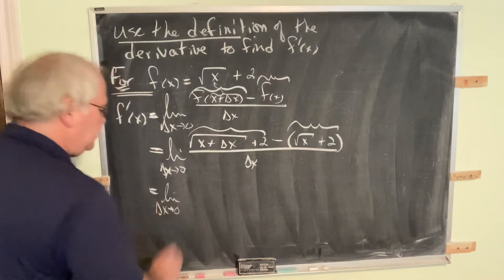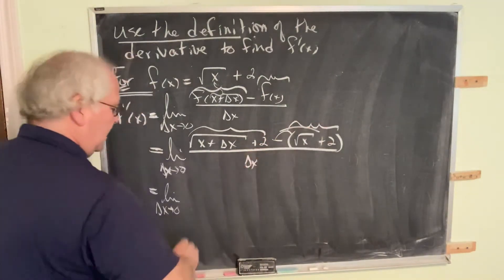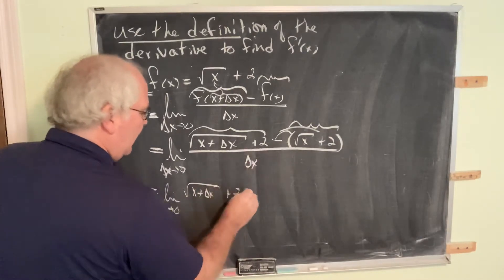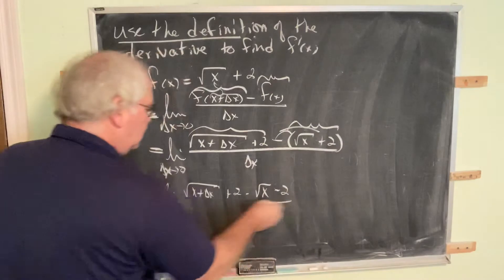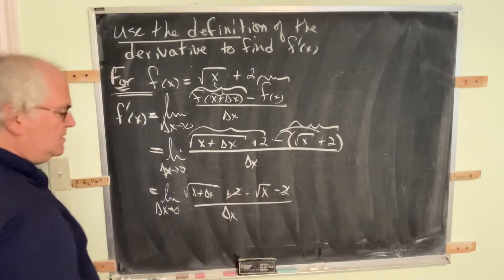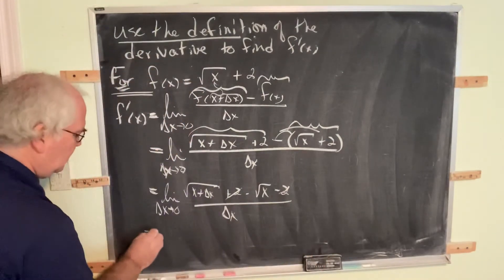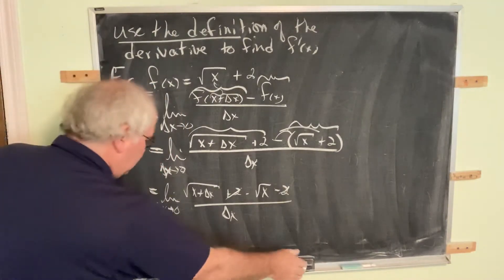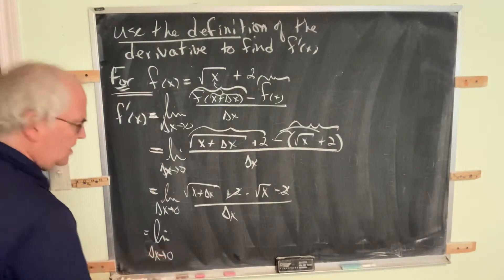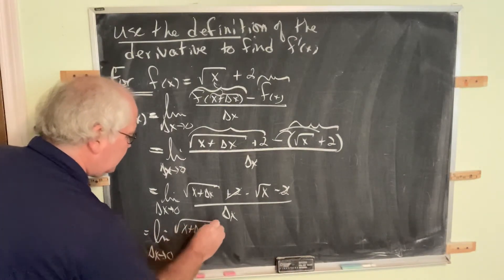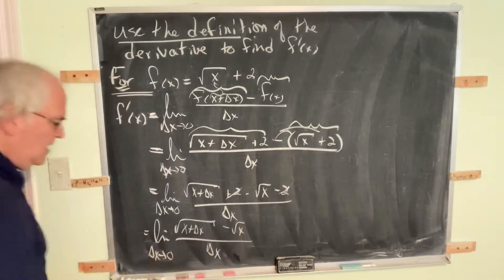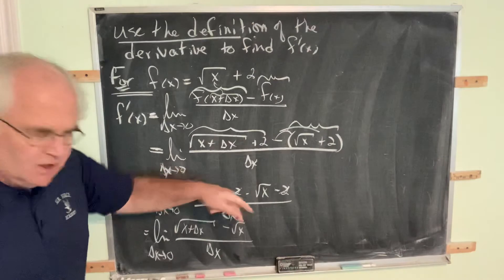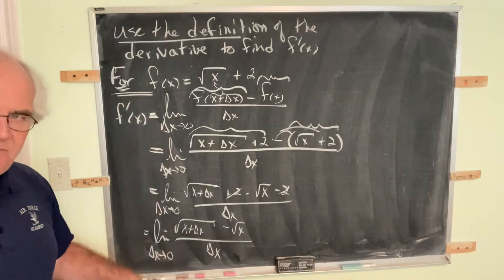So the limit as delta x goes to 0: let's distribute this negative sign. We get minus square root of x minus 2, all over delta x. The 2's cancel, so at least we have that. We're left with the limit as delta x goes to 0 of the square root of x plus delta x minus the square root of x, all over delta x. Again, direct substitution gives us 0 over 0. We need to do more algebra, and we recognize this as a limit variety we saw in chapter 1.